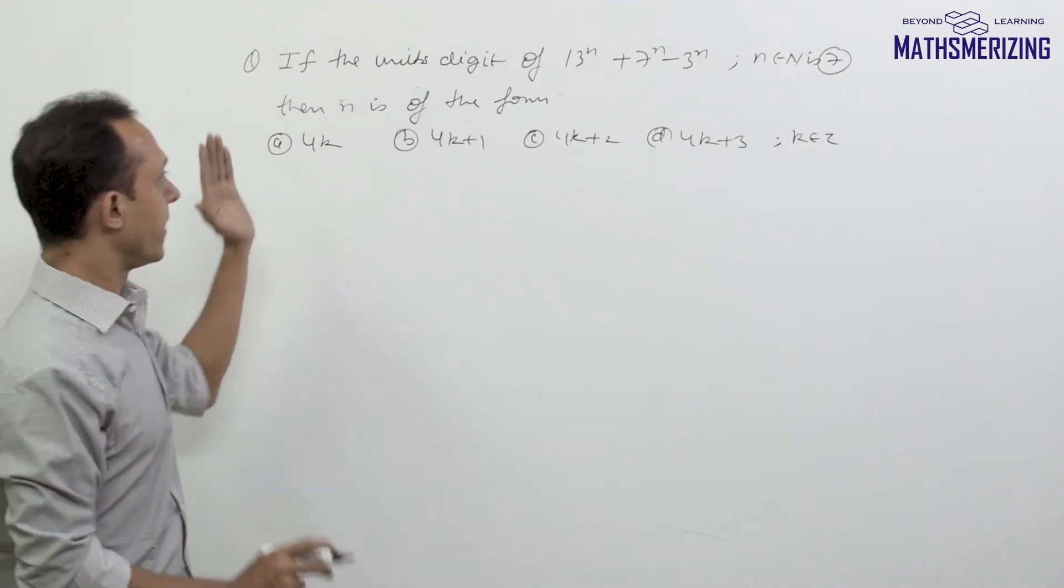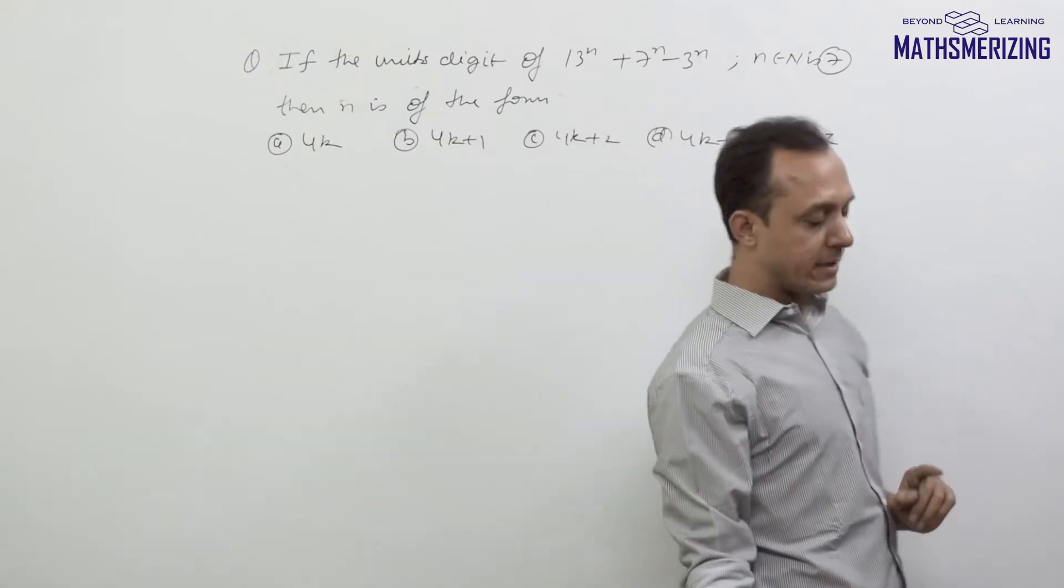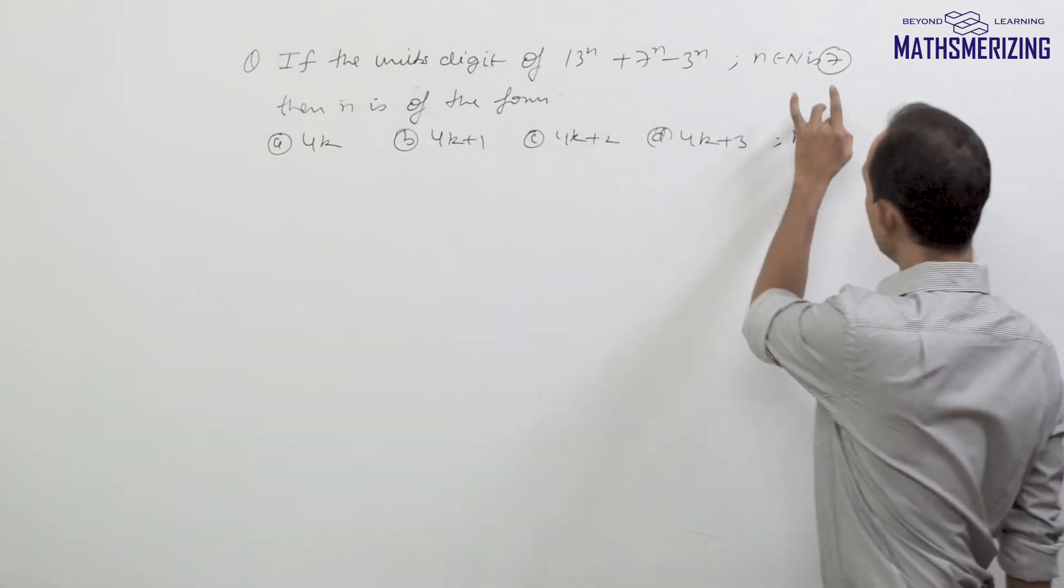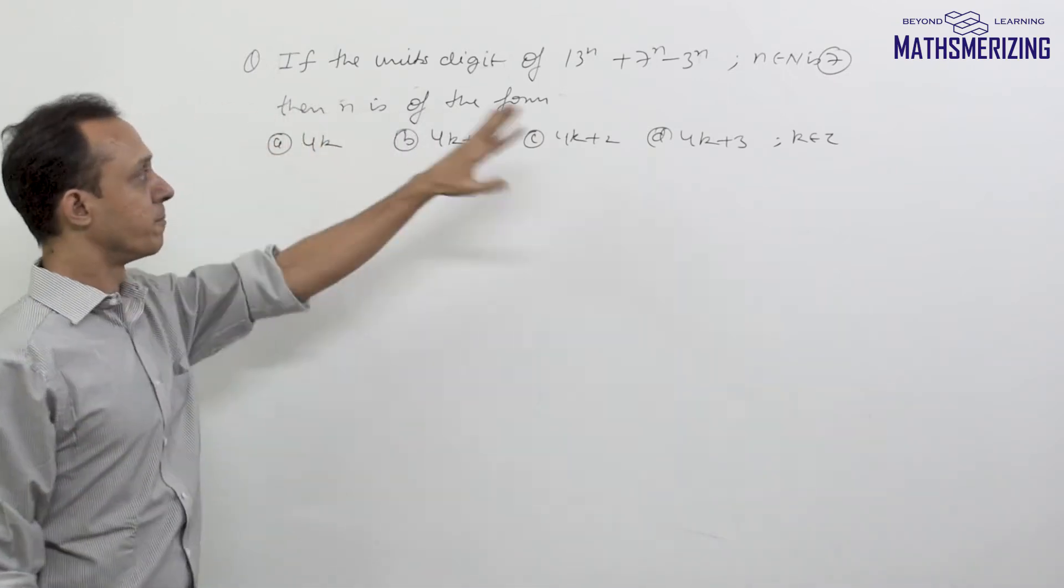Let us think of another question: if the units digit of 13^n + 7^n - 3^n, where n belongs to natural numbers, is 7, then n is of what form? We have to find the correct option.